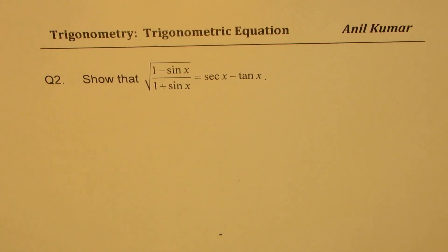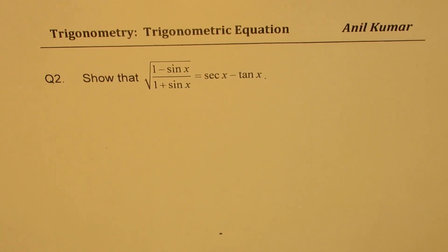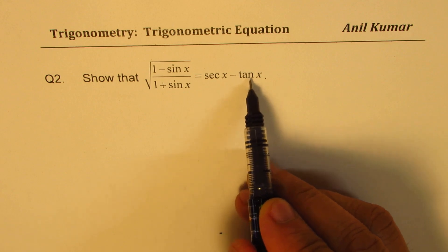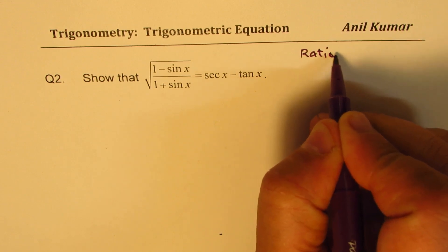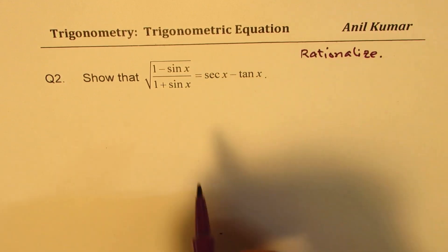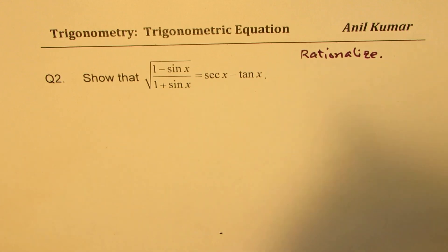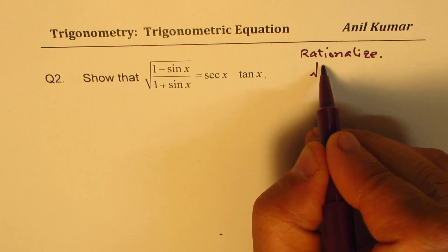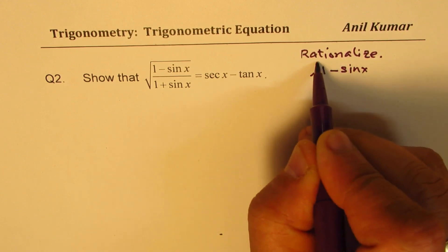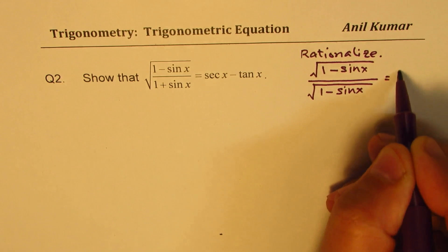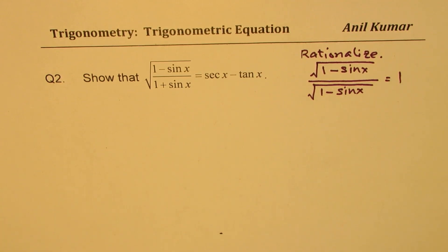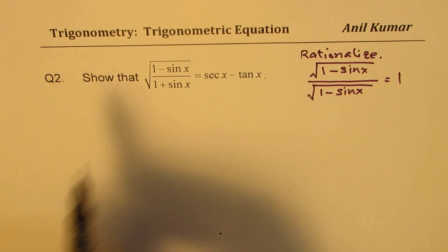Now, let's go to question number 2. Show that √((1-sinx)/(1+sinx)) is equal to secx - tanx. Now, in such questions, the strategy is to rationalize. So we're going to multiply by conjugate of denominator. So what we're going to do is multiply by √(1-sinx)/√(1-sinx). Now, this is equal to 1. So multiplying by 1 will never change the equation. And it really helps to solve such questions.